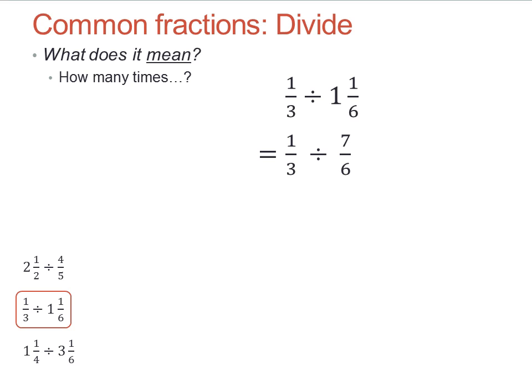It's just the same as with addition. I can use the lowest common denominator, which in this case is six. So, one-third is two-sixths. Then two divided by seven is just two-sevenths.